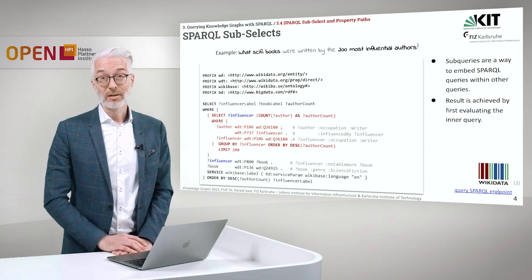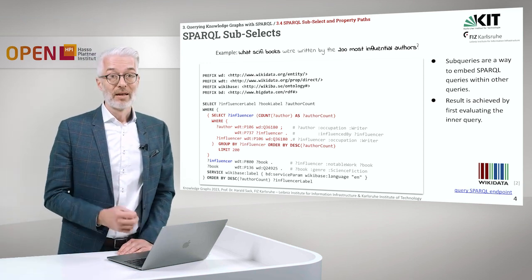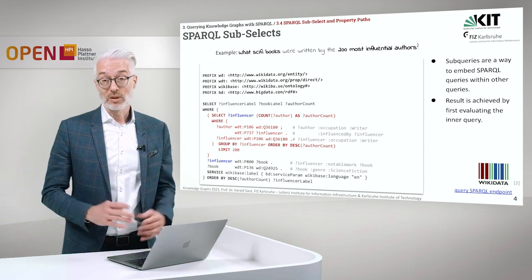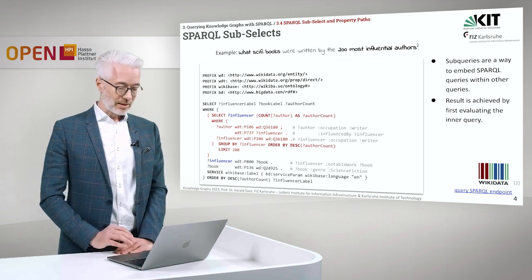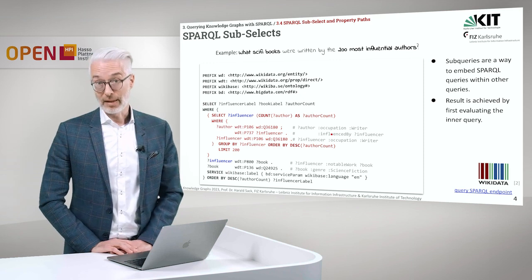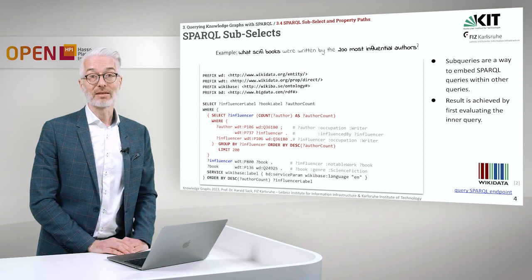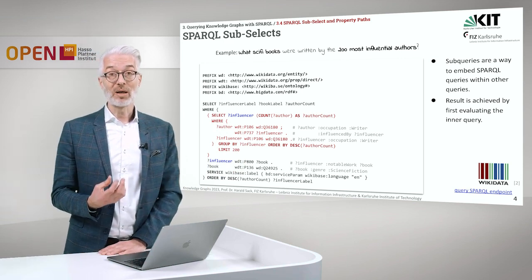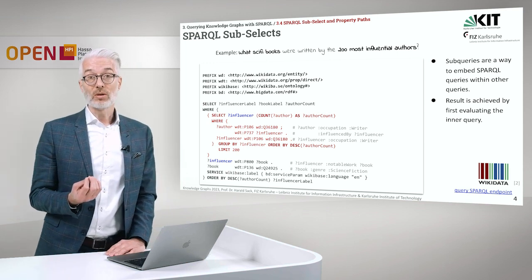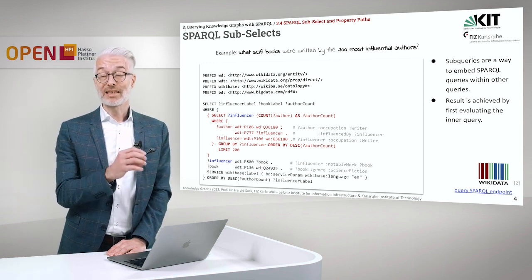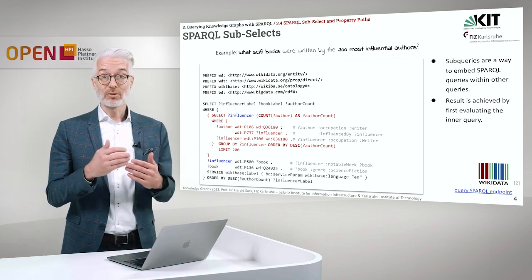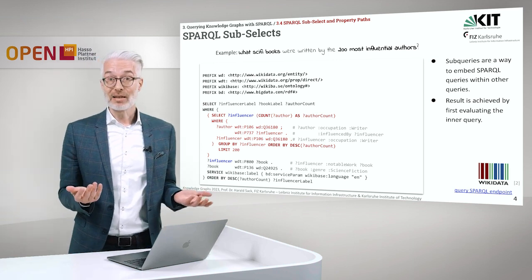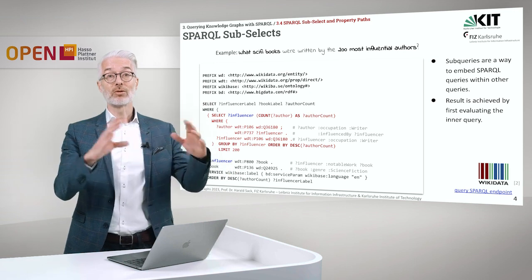What Sci-fi books were written by the 200 most influential authors? It seems to be quite simple, but it's tricky. We have to find out how we determine who is an influential author. By closely inspecting Wikidata and what properties we might use, we find a property called InfluencedBy. By counting how many people have been influenced by a specific person, we can use this for our subsequent query. The problem is we won't be able to find what books have been written by these exactly 200 most influential authors in a single step — we have to compose our SPARQL query out of two SPARQL queries.